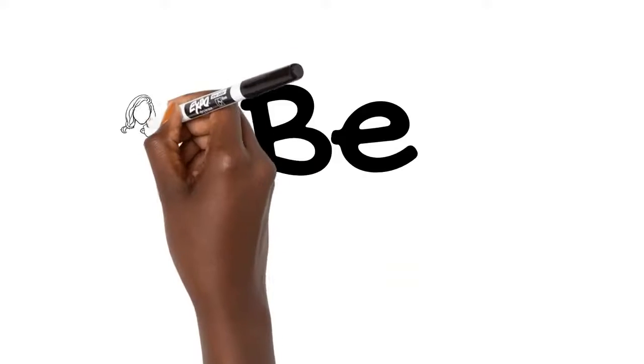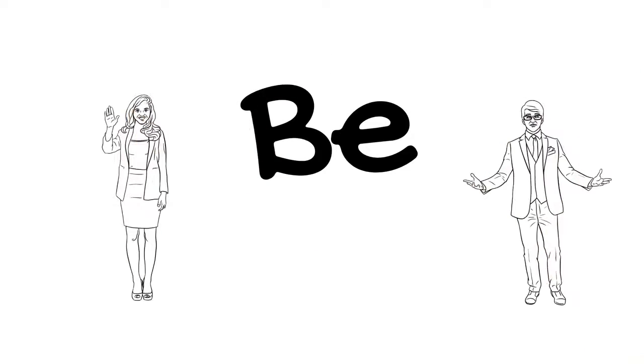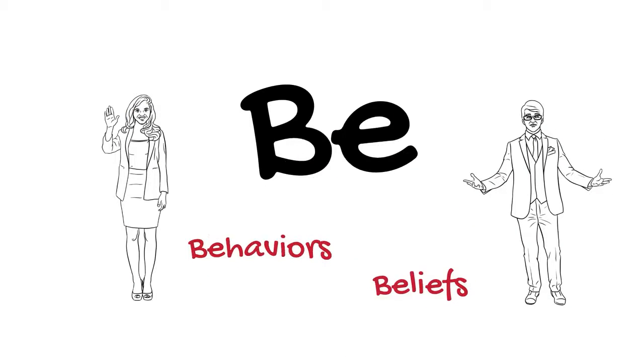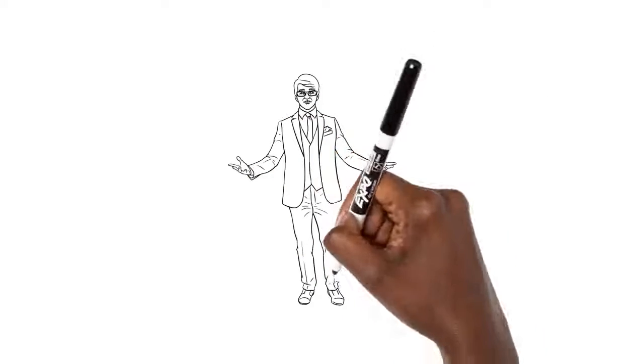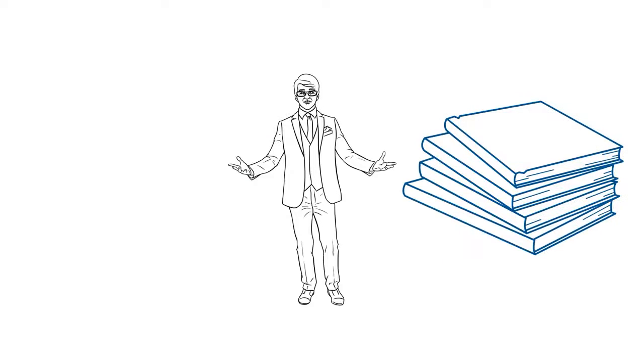See, be is about your beingness. You're a human being, your behaviors, your beliefs, all of the B words. You're not a human doing or a human having. You're a human being. So you've got to work on you. Build yourself, your learning, your knowledge, your belief structure. You become better.